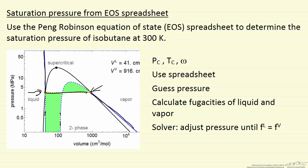So what I've done is list the procedure. We're going to use the critical pressure and the critical temperature and the acentric factor. We're going to put those into the spreadsheet to determine the parameters for the equation of state. And we don't know the pressure, so we're going to guess the pressure initially. We know the temperature. And then we're going to use the equation of state spreadsheet to calculate the fugacities of the liquid and the vapor phase.